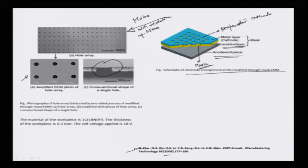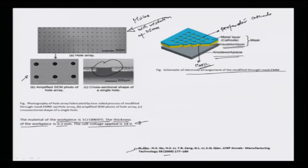The work material made the anode is a chromium alloy — 1Cr18Ni9Ti. The thickness of the workpiece is about 0.3 millimeters (300 microns) and the cell voltage applied for machining is 18 volts. This gives a sense of the voltages, resolutions, and hole diameters achievable with different workpieces.